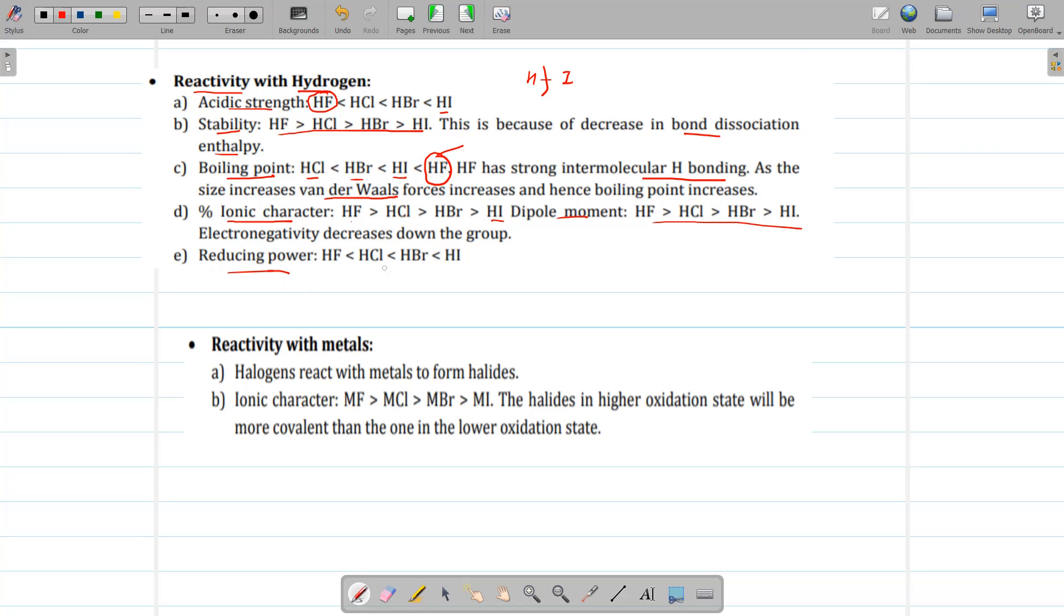Then is the reducing power. Reducing power increases down the group. Why is it so? Because HI is having less bond dissociation energy and that's why it can easily give hydrogen and reduce others.